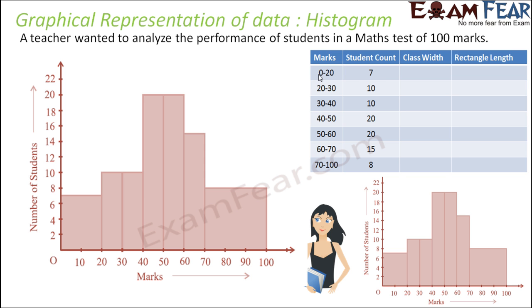The class size for 0 to 20 is 20. For 20 to 30, it is 10. For 30 to 40, it is 10. For 40 to 50, 10. For 50 to 60, 10. For 60 to 70, 10. And for 70 to 100, it is 30. Please note the class width is not the same for all.